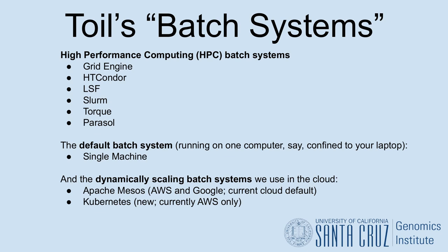And our two dynamically scaling batch systems, which we use in the cloud: Apache Mesos, which is supported by both AWS and Google on the Toil end, and Kubernetes, which is currently supported on the Toil end in AWS.